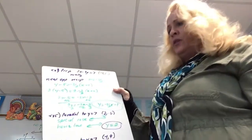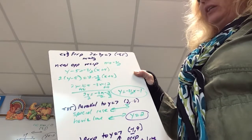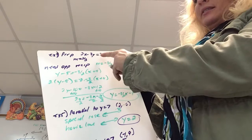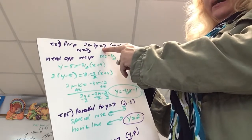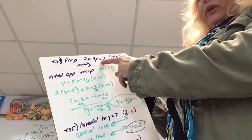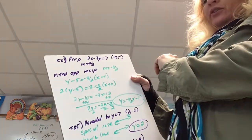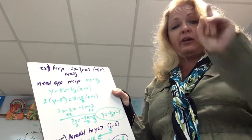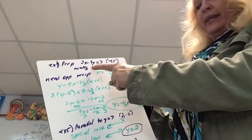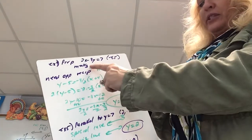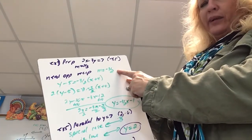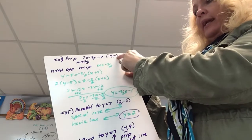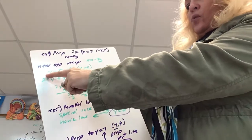In example 4, write the equation of a line perpendicular to this one going through the point (negative 4, 5). This is the same equation from the previous example, so the slope is two-thirds. If I want it to be perpendicular, the slope must go the opposite direction — opposite and reciprocal — so if this is positive two-thirds, the perpendicular slope is negative three-halves. I've got slope and a point, so I'll use point-slope form.